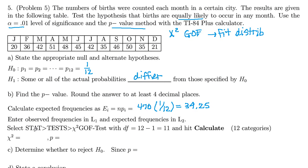So then we're going to select stat, tests, chi-squared goodness of fit. And then we need, there are 12 months or 12 proportions. So 12 minus 1 is 11 degrees of freedom. And then we'll hit calculate.